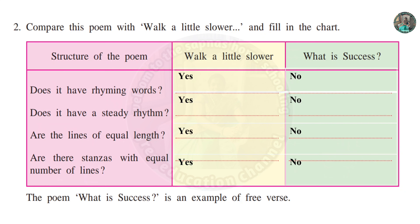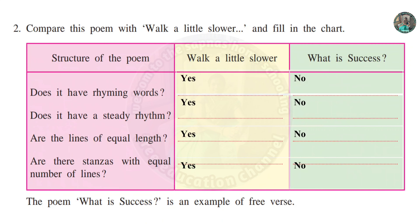Question 2 is: compare this poem with 'Walk a Little Slower' and fill in the chart. Comparing 'Walk a Little Slower' and 'What is Success' - does it have rhyming words? Sometimes - the answer is yes. What is Success does have rhyming words.